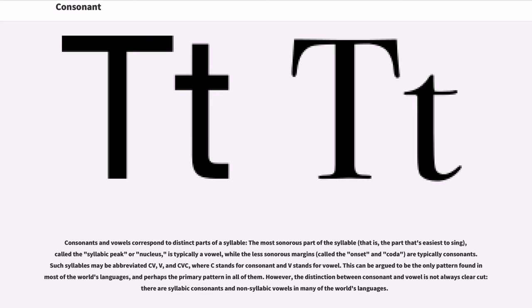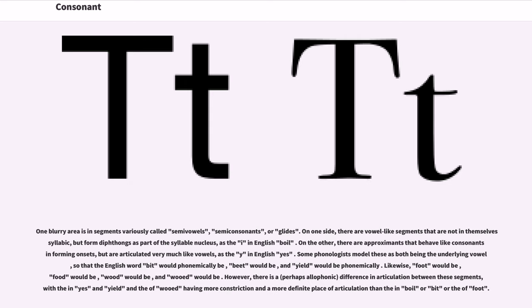This can be argued to be the only pattern found in most of the world's languages, and perhaps the primary pattern in all of them. However, the distinction between consonant and vowel is not always clear-cut. There are syllabic consonants and non-syllabic vowels in many of the world's languages. One blurry area is in segments variously called semi-vowels, semi-consonants, or glides. On one side, there are vowel-like segments that are not themselves syllabic but form diphthongs as part of the syllable nucleus, as the I in English 'boil'.